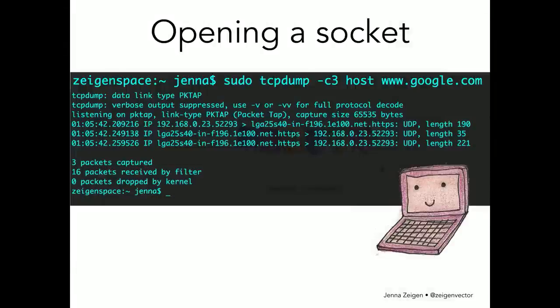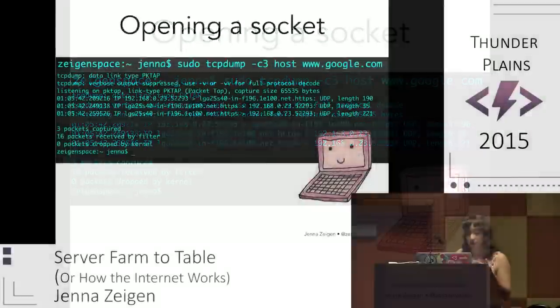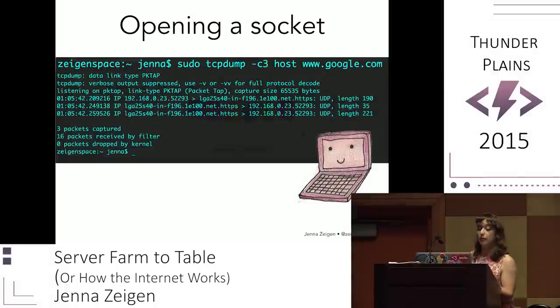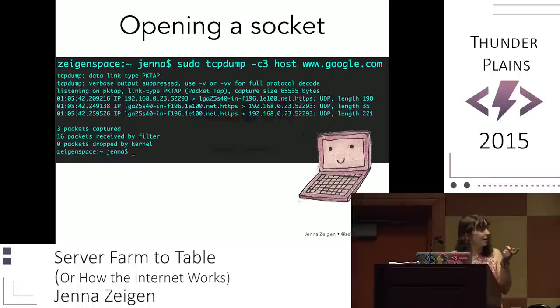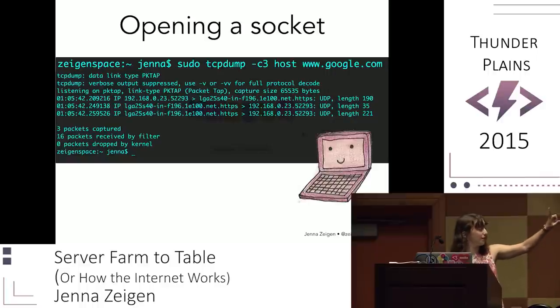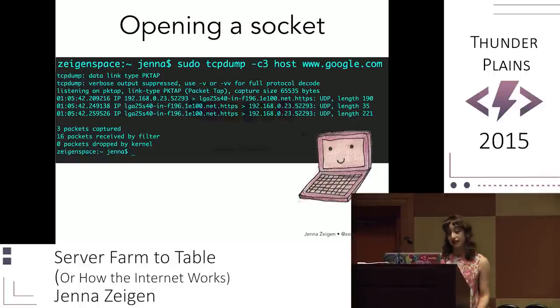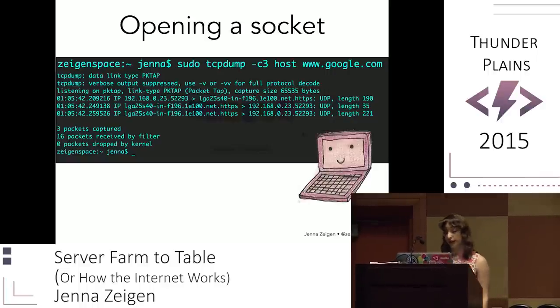If you want to check out TCP, you can use tcpdump in your terminal — you might have to use sudo. You can also use Wireshark if you're more into GUI-type programs. Here I did a kind of organic version of getting www.google.com and it only showed me UDP packets — I imagine there's just some caching going on. It captured just three packets using the -c 3 flag. tcpdump accepts a bunch of flags, so check it out if you're interested.